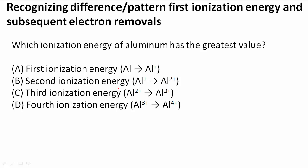Recognizing the difference or pattern of first ionization energy and subsequent energy removals. In this problem it asks which ionization energy of aluminum has the greatest value - so the highest ionization energy, making it the hardest to take that electron.